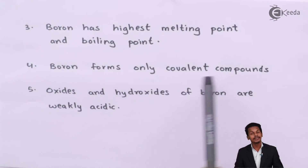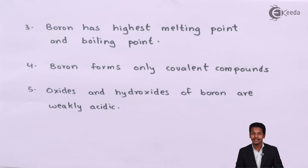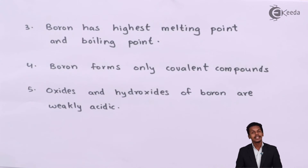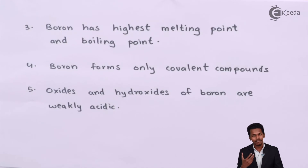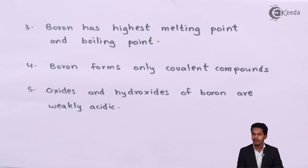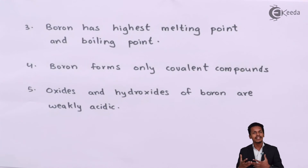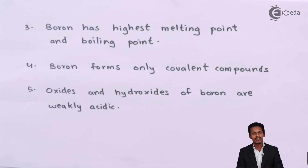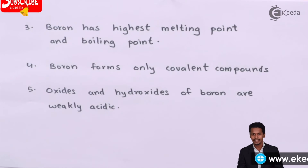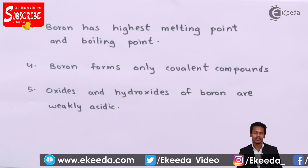The fourth point is that boron forms only covalent compounds. While other elements like aluminum can form both ionic and covalent compounds, boron forms covalent compounds exclusively. This makes its properties comparatively different from the other elements belonging to group 13.